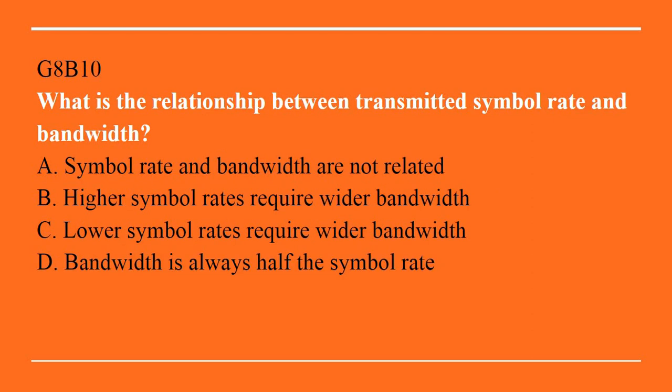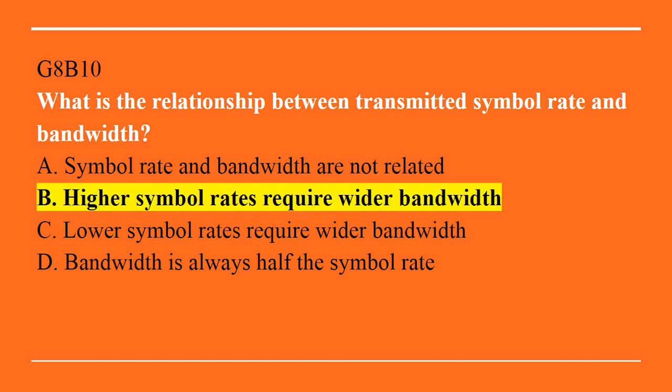G8B10: What is the relationship between transmitted symbol rate and bandwidth? A. Symbol rate and bandwidth are not related. B. Higher symbol rates require wider bandwidth. C. Lower symbol rates require wider bandwidth. D. Bandwidth is always half the symbol rate. Answer is B. Higher symbol rates require wider bandwidth.